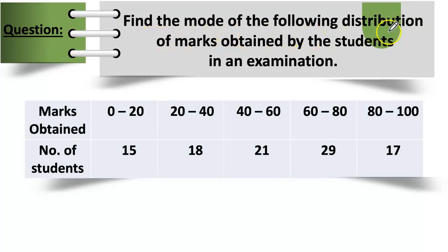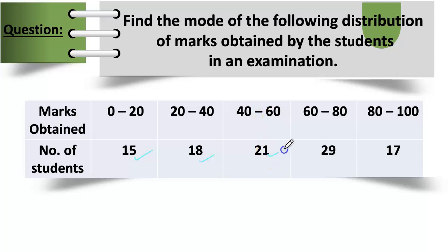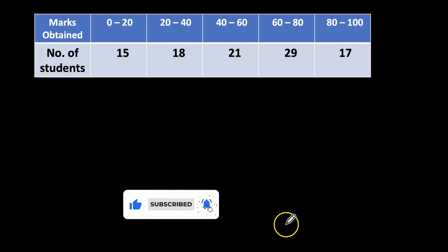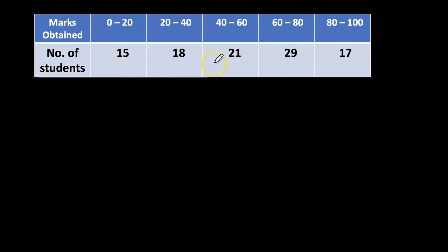Let's see how to find the mode of grouped data. Question: Find the mode of the following distribution of marks obtained by students in an examination. Marks 0–20: 15 students, 20–40: 18 students, 40–60: 21 students, 60–80: 29 students, 80–100: 17 students.